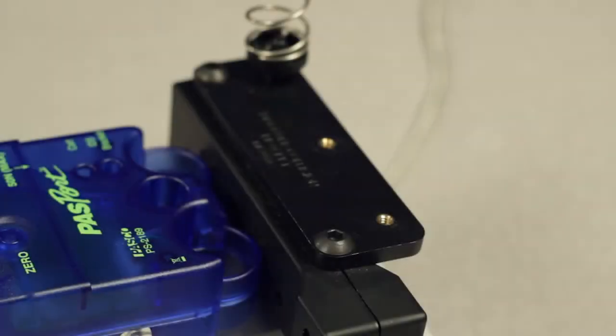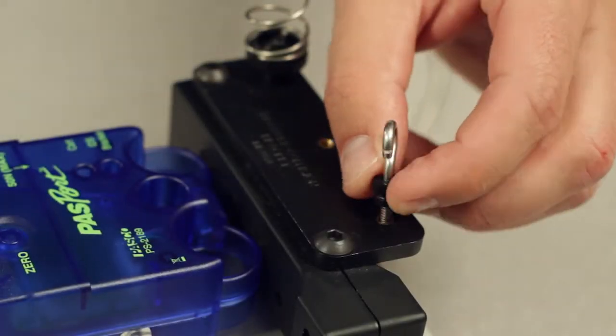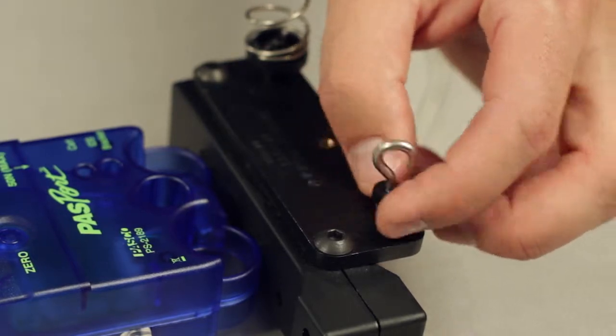When not in use, the two spring bumpers, as well as the force sensor hook or bumper, can be stored in the threaded socket on the top of the bracket.